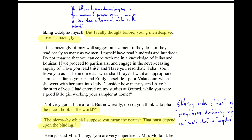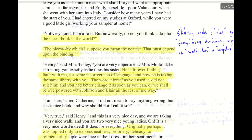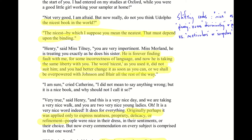Catherine asks: 'Do you not think Udolpho the nicest book in the world?' Henry responds: 'The nicest? By which I suppose you mean the neatest. That must depend upon the binding.' Henry, as an Oxford-educated man, applies the prescriptive framework of language — making fun of Catherine's use of 'nice.' At that time, 'nice' meant either a fine distinction or 'neat,' not simply 'pleasant.' Eleanor intervenes: 'He is forever finding fault with me for some incorrectness of language, and now he is taking the same liberty with you. You had better change it as soon as you can, or we shall be overpowered with Johnson and Blair all the rest of the way.'